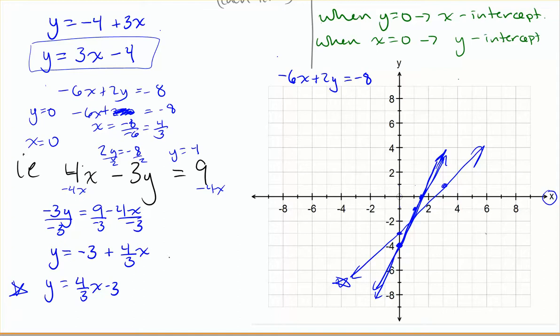Or I could use the cover-up method. So again, 4x minus 3y is equal to 9. If I cover up the y, meaning when y is equal to 0, I'll get my x-intercept. That would mean that x is equal to 9 over 4. So on my x-intercept, 9 over 4, well, that's basically 2.25. So you can see here, that's pretty close. That would be the point that I'd put down to get my x-intercept.